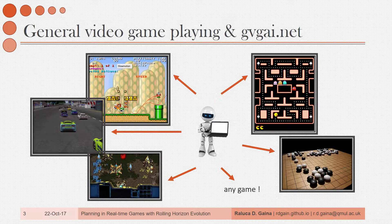The rest of this talk, however, will be focused on the single-player planning problem, in which agents have 40ms thinking time in every game tick — the equivalent of a 25 frames per second game. The only information agents receive about the game is a broad description of the current game tick. Having no access to the game rules, this means that they have to find out how to win the game.